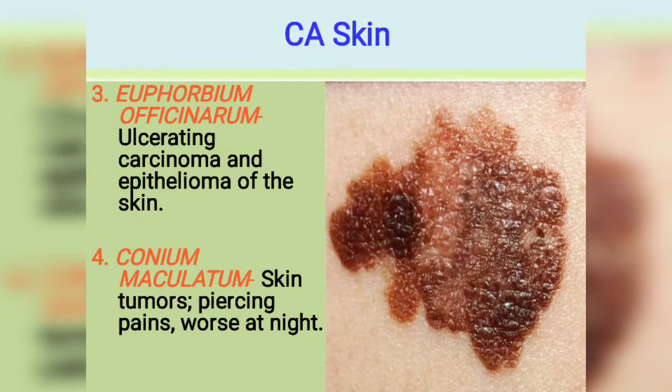Next, continuing with CA skin — here you can see melanoma. Euphorbia is the medicine for ulcerating carcinoma and epithelioma of the skin.